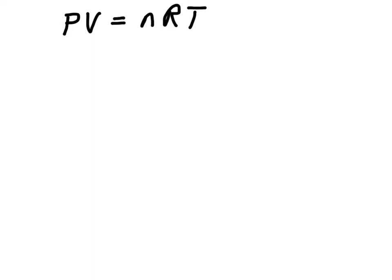But you may also recall molar mass. Molar mass is the grams per mole of a substance, so molar mass is G over N, and I can rewrite that as N is G over molar mass.